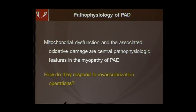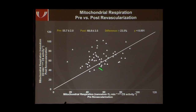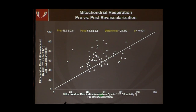One question our group has attempted to answer is: how does this myopathy respond to revascularization? I'm going to share an interim analysis of a study of 50 patients — specifically the first 35. These patients had evaluation of their muscle, function, and quality of life at baseline and then six months after bypass operation. On the x-axis is mitochondrial respiration at baseline, and on the y-axis is after six months. The line of equivalence shows no change; above it indicates increase, below indicates decrease. Mitochondrial function improved about 23% in a statistically significant fashion.